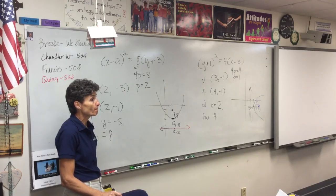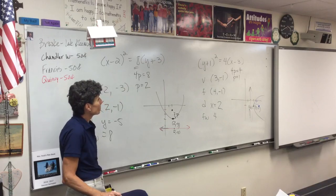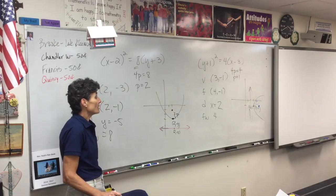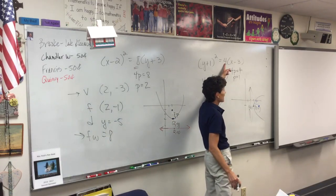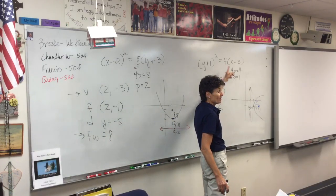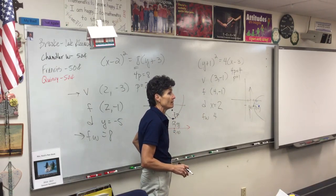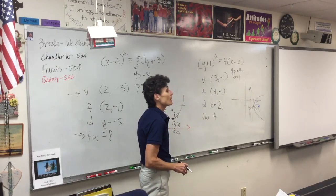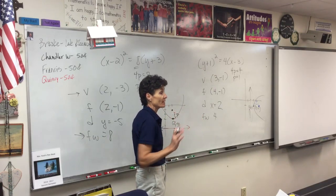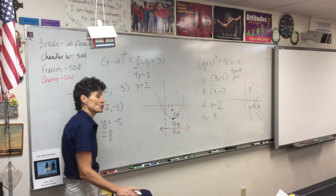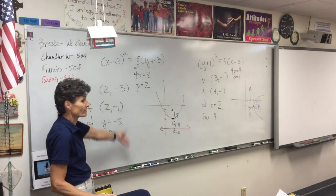Student question: would the parabola open the other way? No — the vertex has nothing to do with it. The only way it opens left is if that number is negative. The vertex is the vertex; it doesn't affect the direction of opening. Because it's y squared, it went sideways. Whatever letter is squared: y squared is sideways, x squared is up and down.